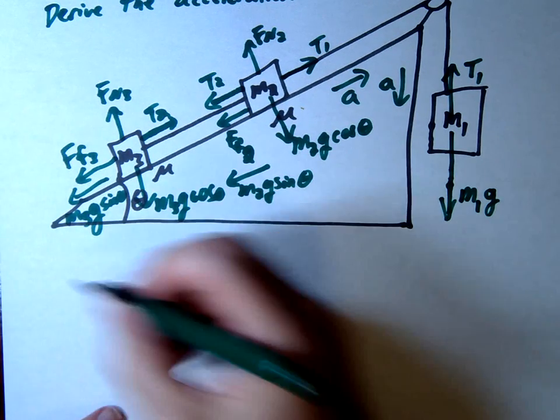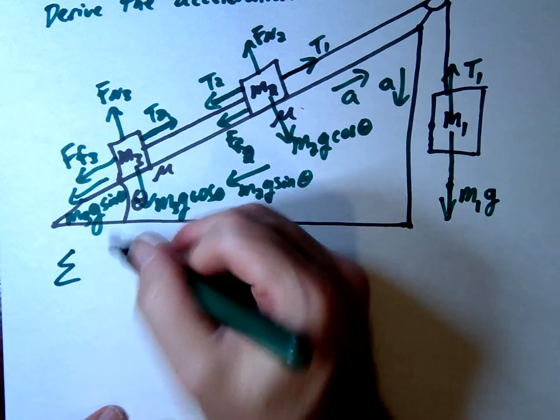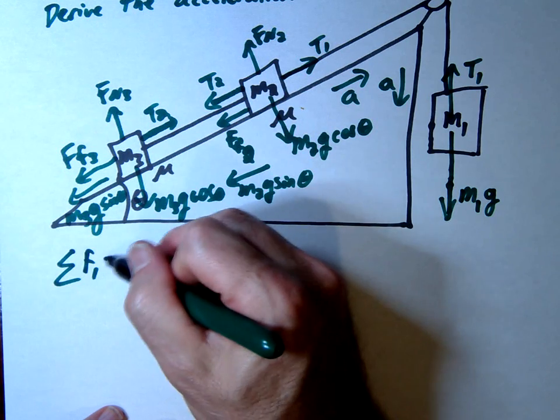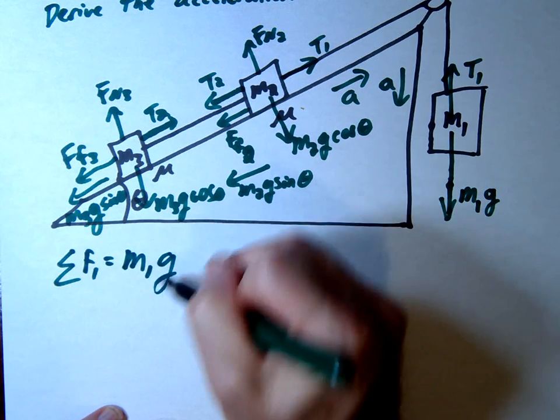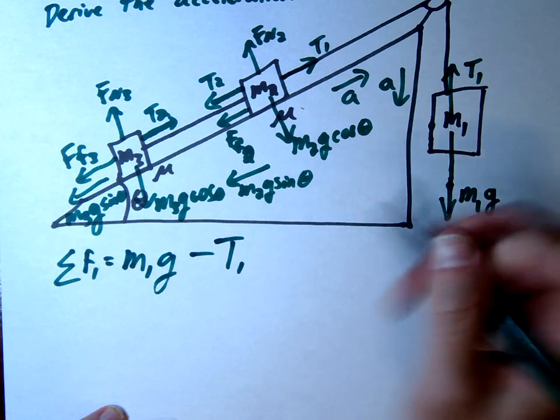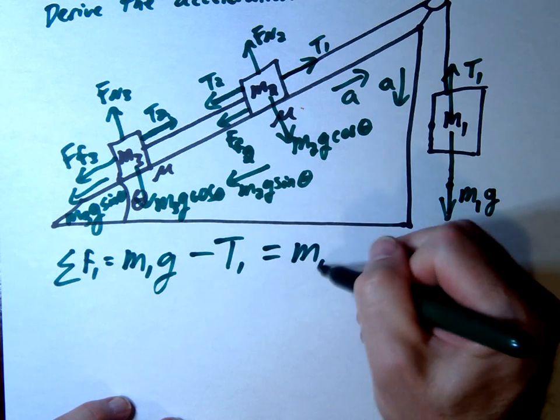So let's do our summation. So we'll do that very first mass. That's going to be M1G minus tension 1 equals M1A.